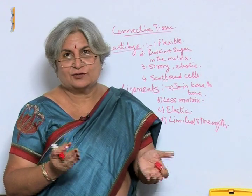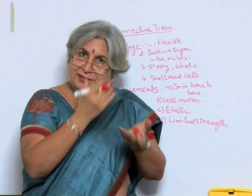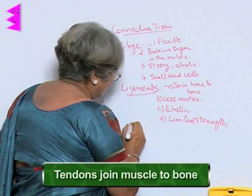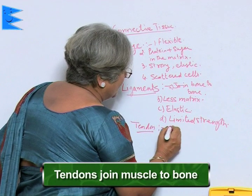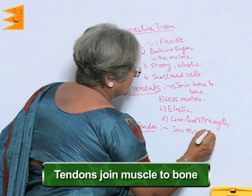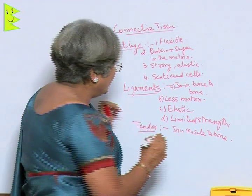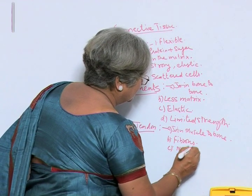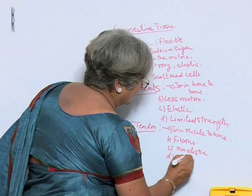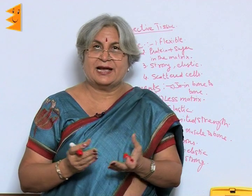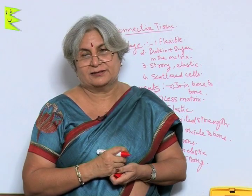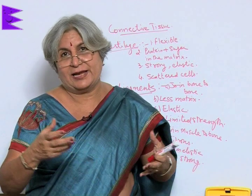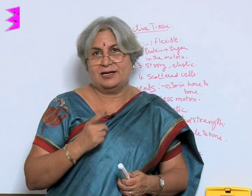Bones are covered by muscles, which also have to be connected. They are connected by tendons. Tendons join muscle to bone. They are not elastic like ligaments — they are fibrous, non-elastic, but very strong. Sportsmen often rupture their ligaments because, although ligaments are elastic, if you really stretch your limbs too much while playing cricket or football, the ligament can break.